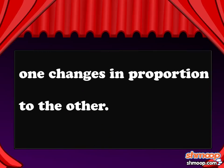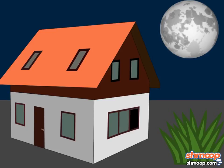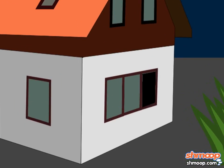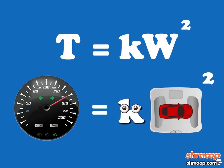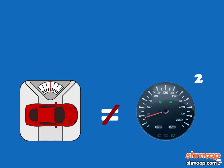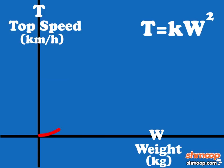This direct variability thing is a big theme. K snuck in there because the top speed is related proportionally to the square of the weight, but not exactly — meaning K has to multiply it to adjust that square. In other words, the weight of the car is not exactly the square of the top speed, but the weight of the car squared increases at the same rate as the top speed.